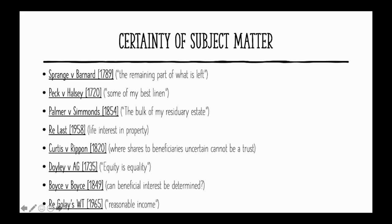Moving on to Doily in 1735. This case states that when it is not apparent how assets shall be split, the equitable maxim 'equity is equality' takes charge, meaning the assets are split equally. A fixed trust will arise, and trustees will not have discretion as to how to distribute the assets if the testator has not stated any discretion. Equity states that every person entitled should receive the same amount.